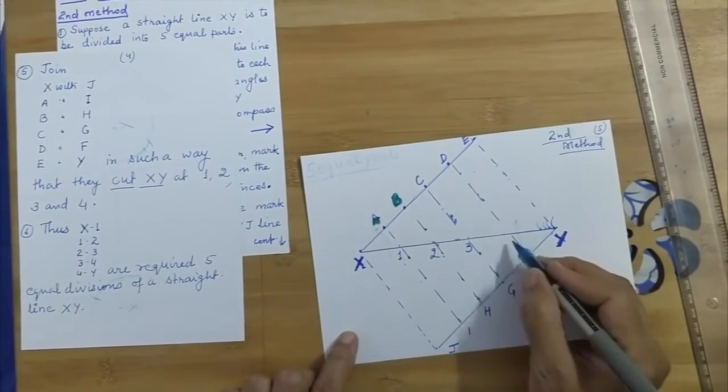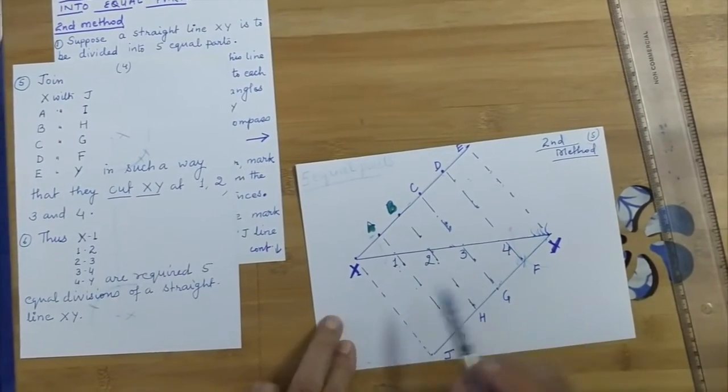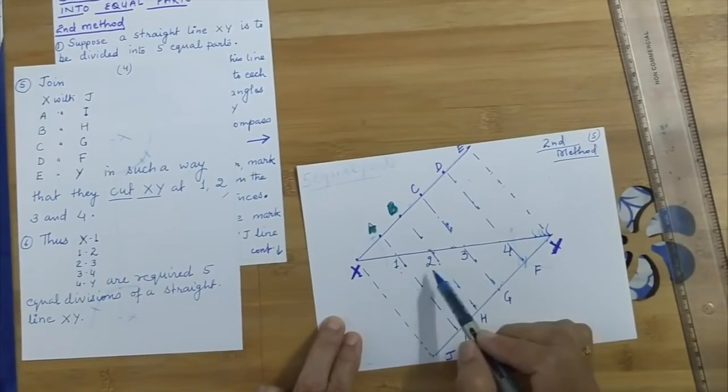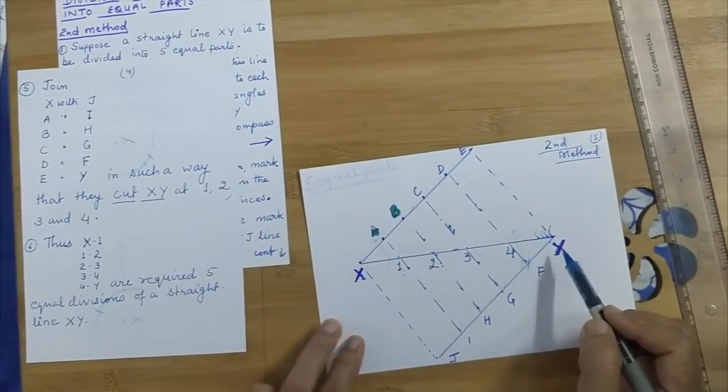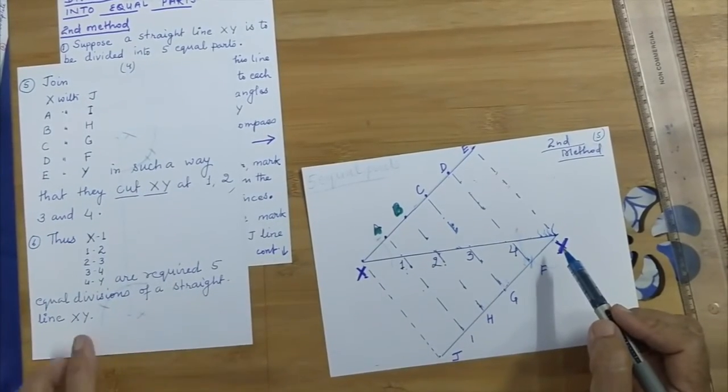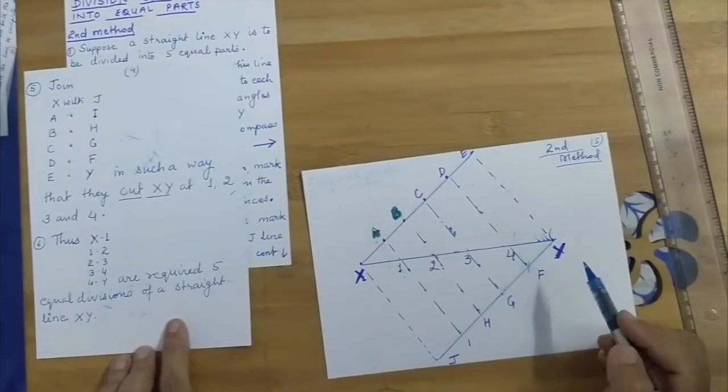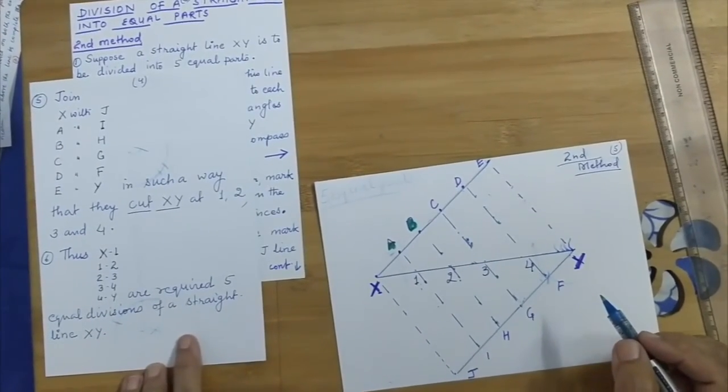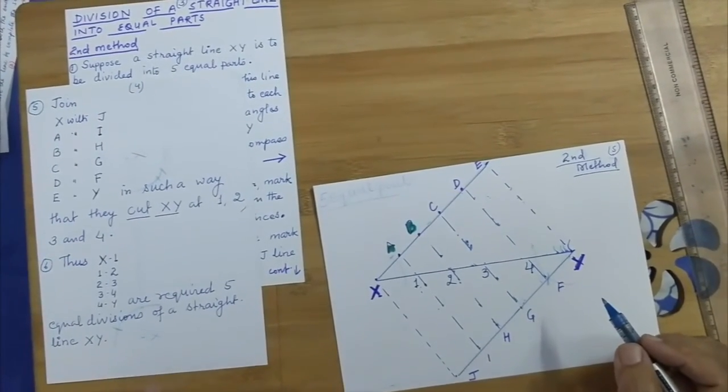Thus, X-1, 1-2, 2-3, 3-4, and 4-Y are the required five equal divisions of straight line XY. Thank you. This also has to be done before you are making a scale.